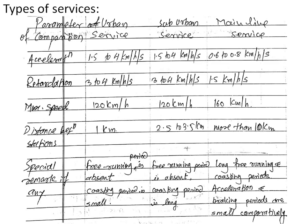We summarize in table format: urban service, suburban service, and mainline service. Comparing with standard values defined by RDSO of Indian Railways. For acceleration: urban and suburban services, 1.5 to 4 km/h/s; mainline service, 0.6 to 0.8 km/h/s. Retardation: 3 to 4 km/h/s for urban and suburban; 1.5 km/h/s for mainline. Maximum speed: 120 km/h for urban and suburban; 160 km/h for mainline. Distance between stations: 1 km for urban, 2.5 to 3.5 km for suburban, and more than 10 to 15 km for mainline service.